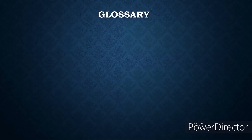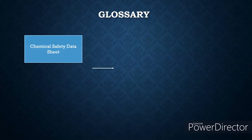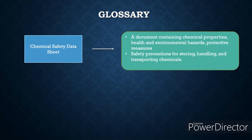Next is the Chemical Safety Data Sheet, which is a document containing chemical properties, health and environmental hazards, protective measures, and safety precautions for storing, handling, and transporting chemicals.